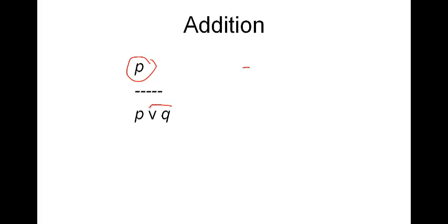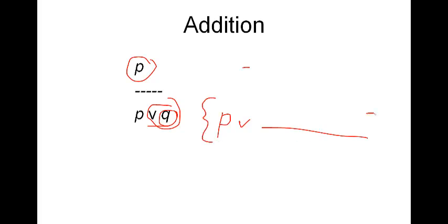Finally, this one always upsets students — the rule of addition. Given any premise p, you can conclude 'p or q', adding anything with the disjunction. If you know that p is true, then it's also true that 'p or anything at all' is true. By the rule of addition, you can add things with the disjunction as you wish to premises.